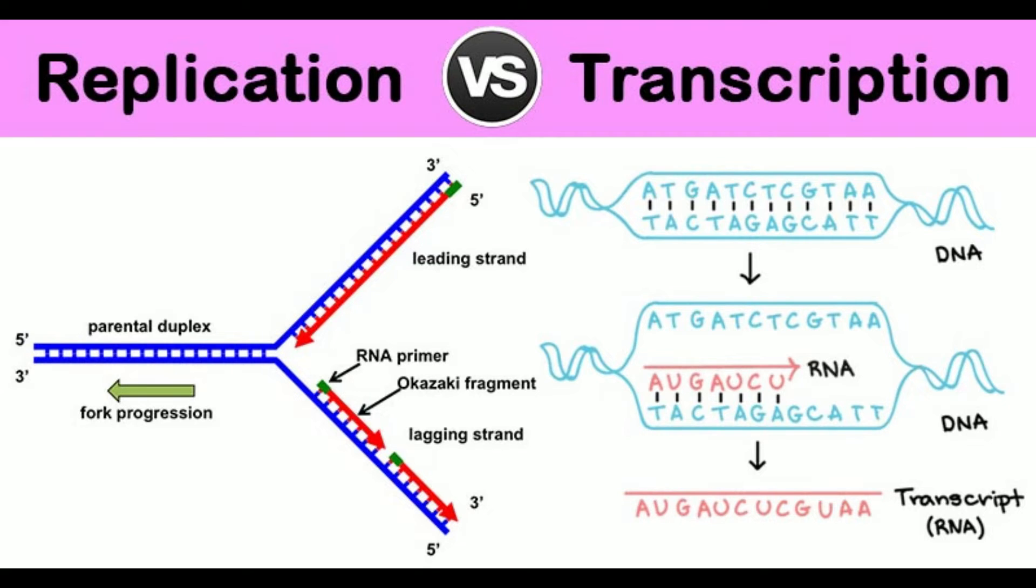2. Significance: DNA replication is important for properly regulating the growth and division of cells. Transcription of DNA is the method for regulating gene expression.